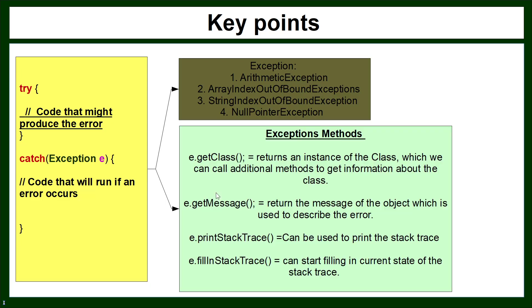In this video we're going to talk about what methods you can call on 'e', this instance of the exception. For example, if you use the getClass() method, it returns an instance of that class, telling you what the instance is, and then you can call additional methods from that instance. The getMessage() method returns the message of the object which describes the error — for example, if you have an arithmetic error dividing by zero, it produces a description saying you're not allowed to divide by zero.